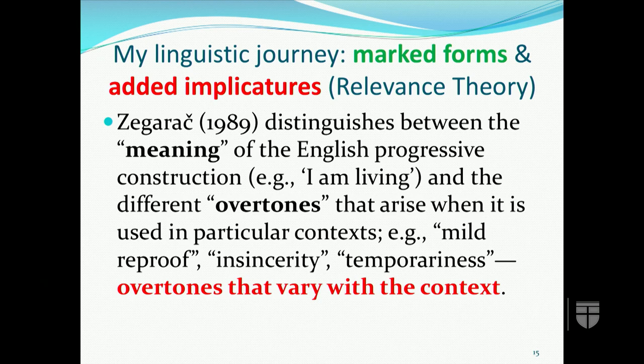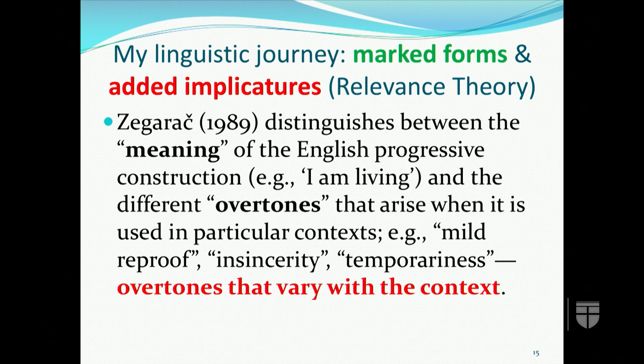Point three: relevance theory claims about marked forms and added implicatures. In his 1989 article on the English progressive, Zigaretz argues for the need to distinguish between the meaning of a construction and the different overtones that arise when it's used in certain contexts. For example, 'it's raining outside' is straightforward, but 'John is being nice' describes a state as though it were changeable — producing overtones of mild reproof, insincerity, or temporariness. These overtones come from using a form typically found in one context in a context where you wouldn't normally expect it.